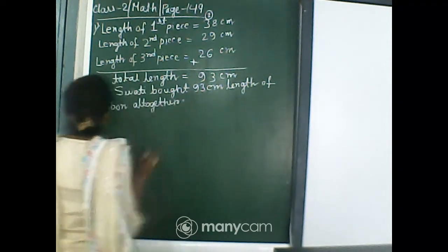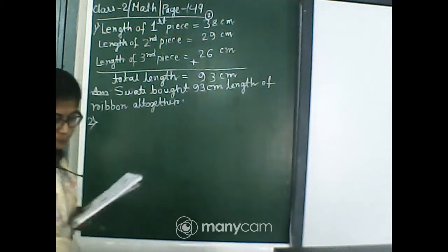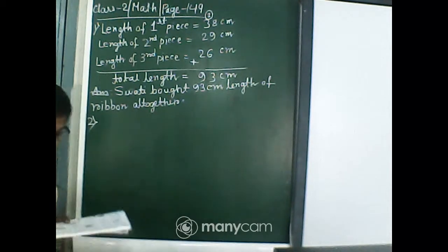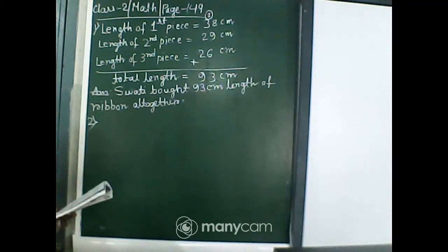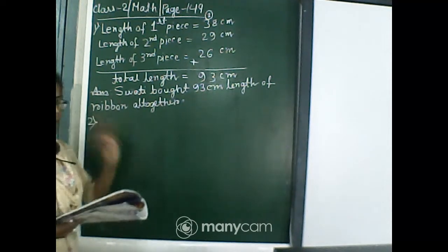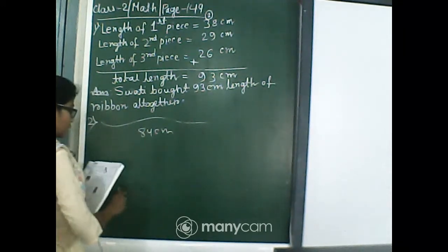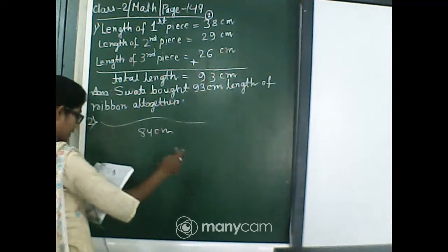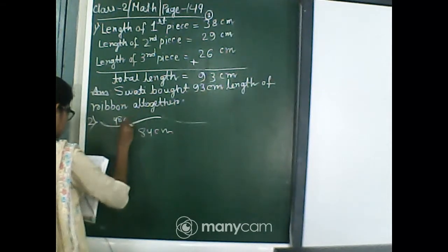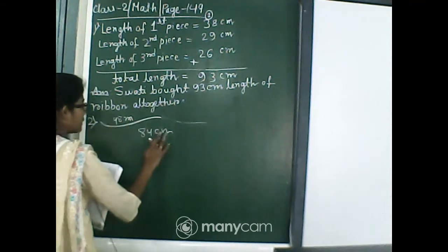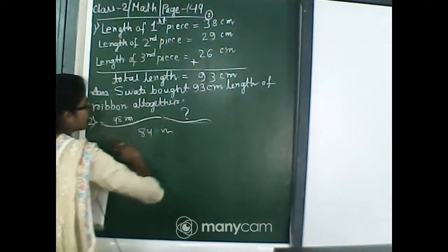Now number 2. A rope 84 meter long is cut into 2 pieces. So that means this is a rope which is 84 meter. Now it is cut into 2 pieces. The now one length is this length, 48 meter. Now what is the length of this part?